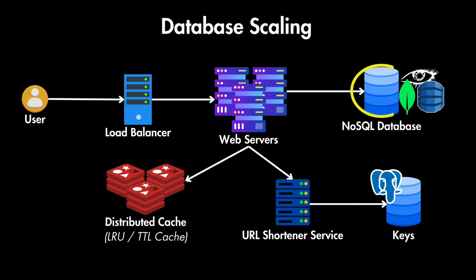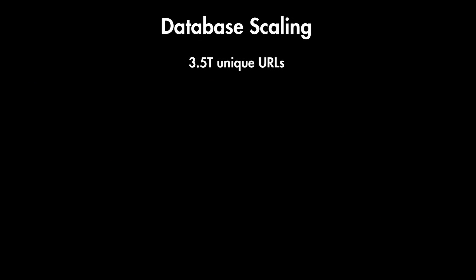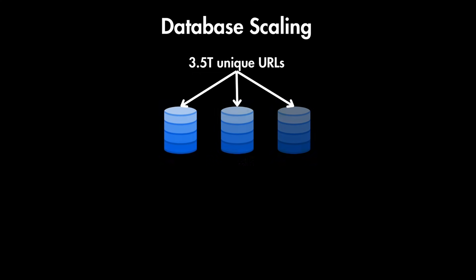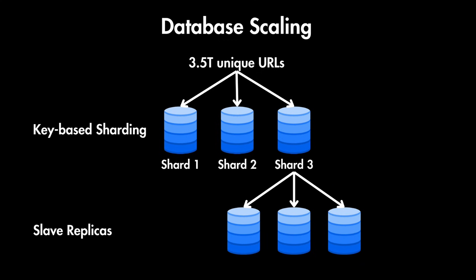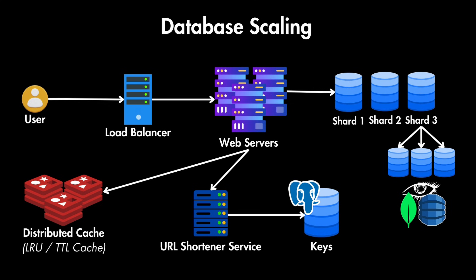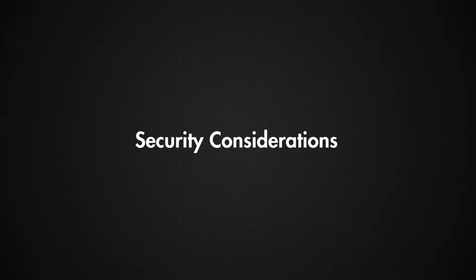To ensure the database supports high availability and fault tolerance we need replication and sharding. Considering we have 3.5 trillion unique URLs with our 7-character set, we can use key-based sharding to distribute URL records across multiple shards evenly. For example, distributing across 3 shards means each shard holds approximately 1 trillion URLs, ensuring scalability as the system grows. We can also implement master-slave replication within each shard for high availability and fault tolerance, allowing quick failover and recovery on node failure. Each shard will have one master database and three slave databases — slaves handle reads while the master handles reads and writes — and we can always add more shards or slave databases as needed.